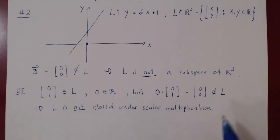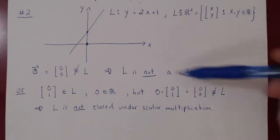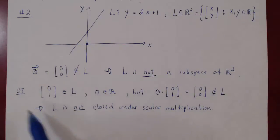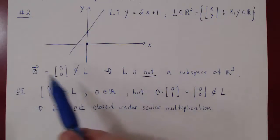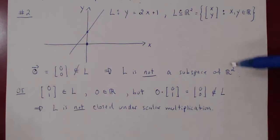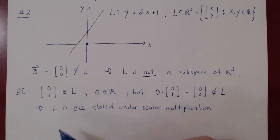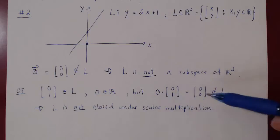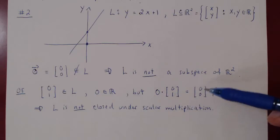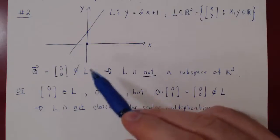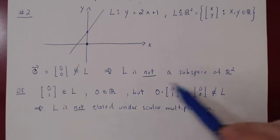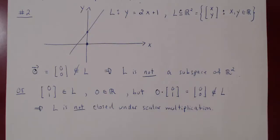As soon as one axiom is not satisfied, the set is not a vector space. Therefore L is not a subspace of R². If a set is closed under scalar multiplication, the space must contain the zero vector, because any vector in your space times the zero real number is the zero vector. So if the zero vector is not an element of the space, the space is not closed under scalar multiplication and is not a subspace of R².